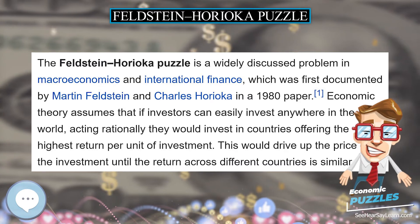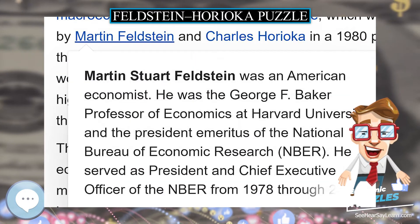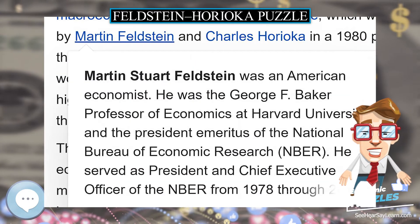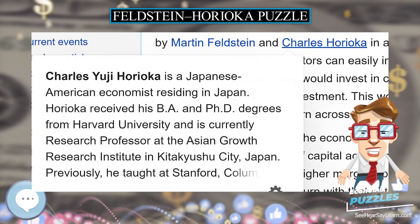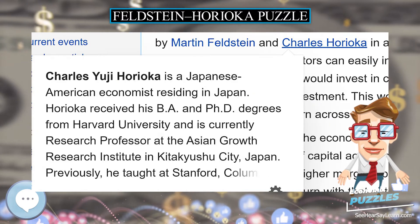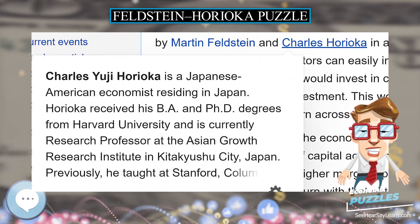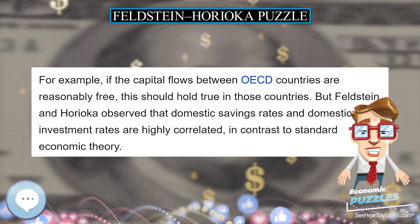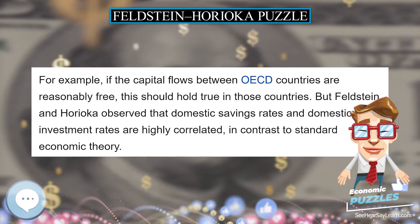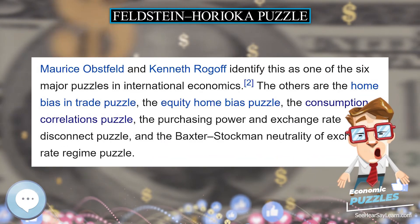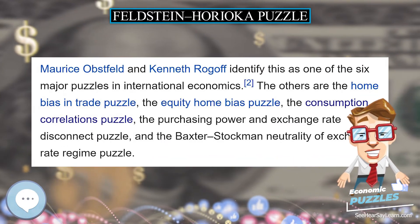Morris Obstfeld and Kenneth Rogoff identify this as one of the six major puzzles in international economics. The others are the home bias in trade puzzle, the equity home bias puzzle, the consumption correlations puzzle, the purchasing power and exchange rate disconnect puzzle, and the Baxter-Stockman neutrality of exchange rate regime puzzle.